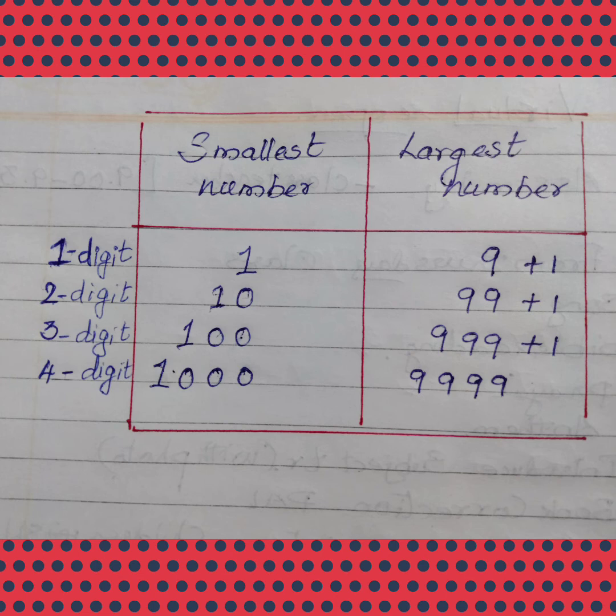That comes in the 2 digit number. Smallest 2 digit number is 10. And after 10, the number is increasing as it goes. And the largest number is 99. And after 99, it is 100.